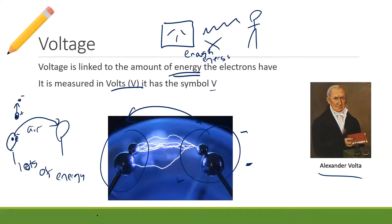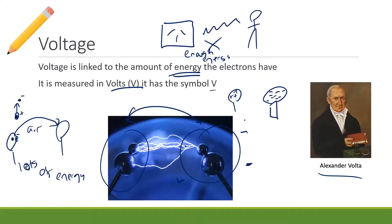You have to make those electrons repel each other so much that they're willing to jump to the other side. If you have one extra electron it wouldn't care, but if you have so many electrons they want to jump — that's what voltage is: the amount of energy you're giving them. You make something more charged by adding more positives, or there's another way.